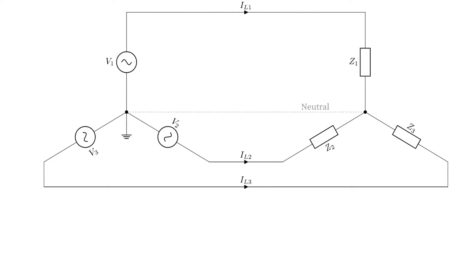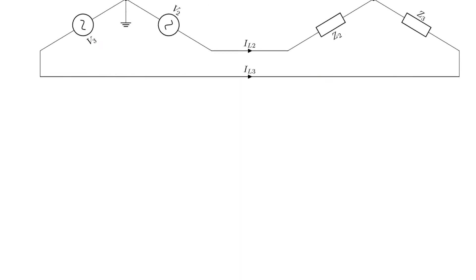We'll use the same supply voltages that we saw in our example of a balanced network. We have V1, V2 and V3 being equal to 240 volts at angles of zero, minus 120, and plus 120 degrees respectively.